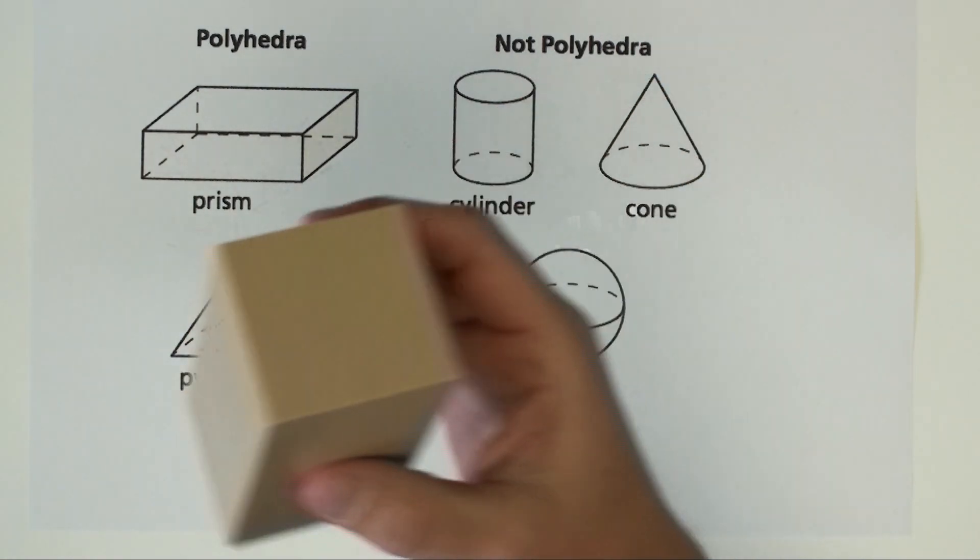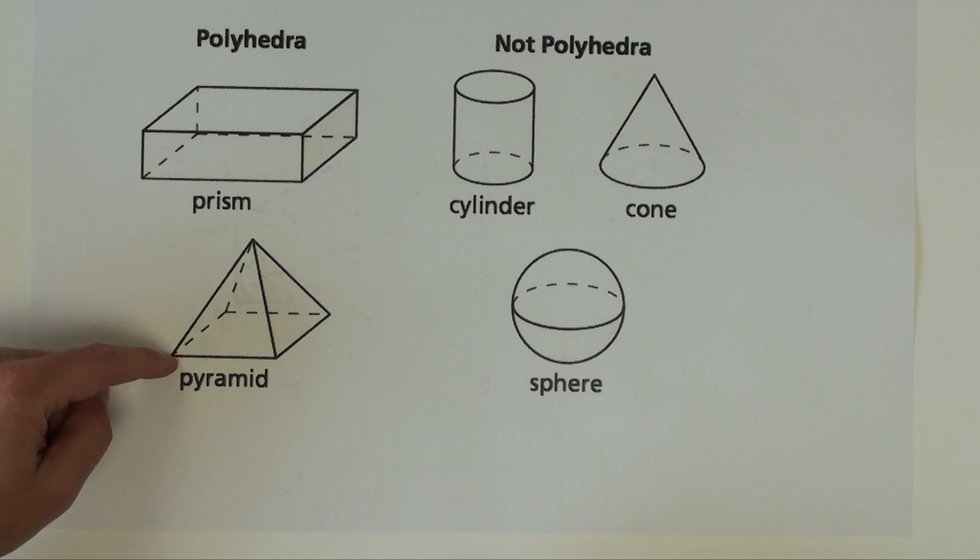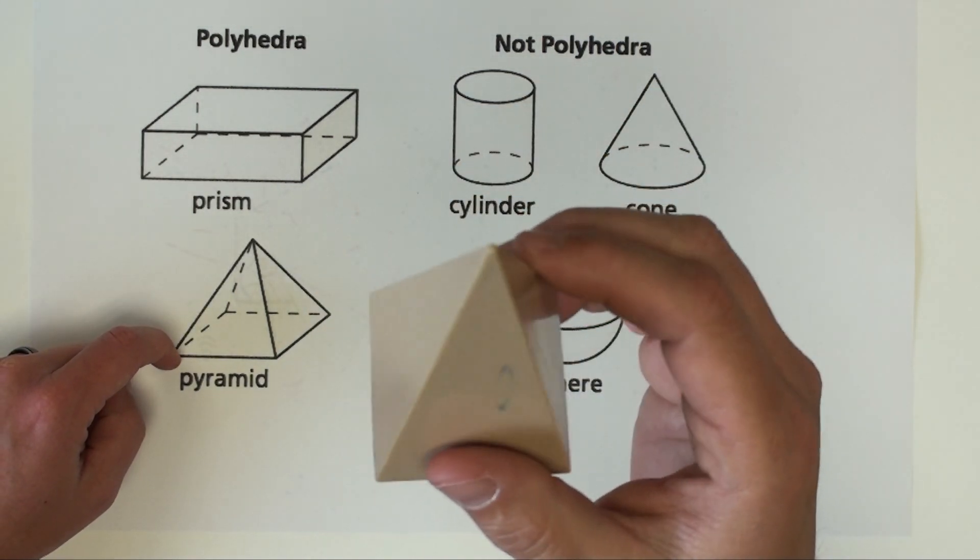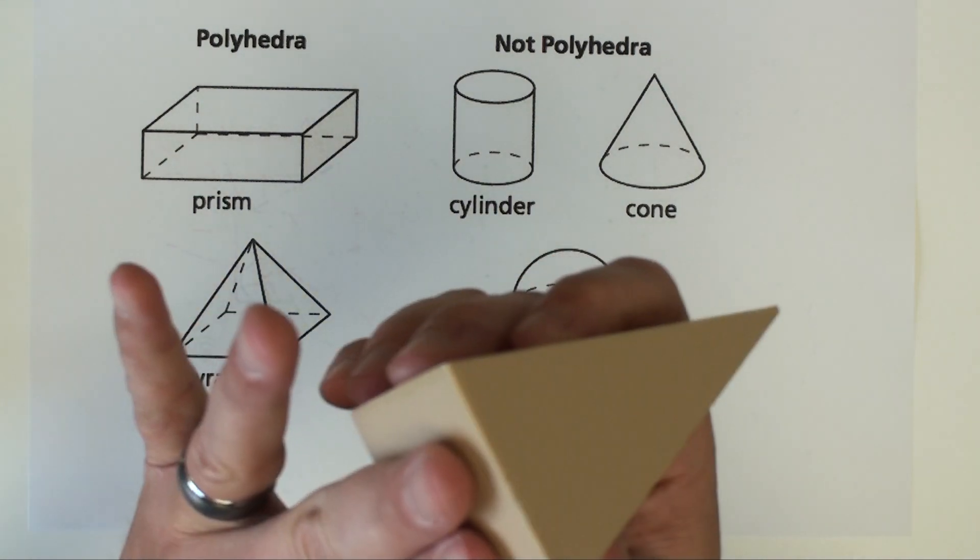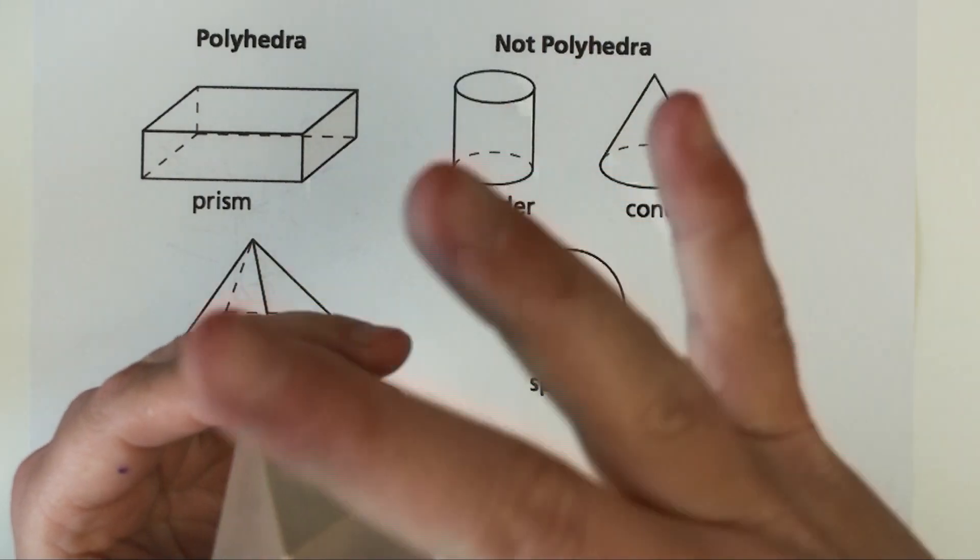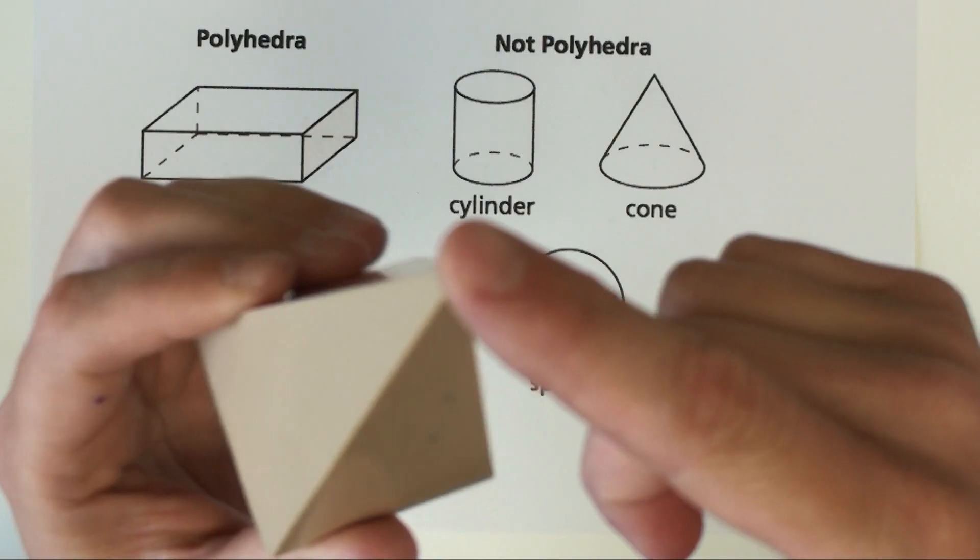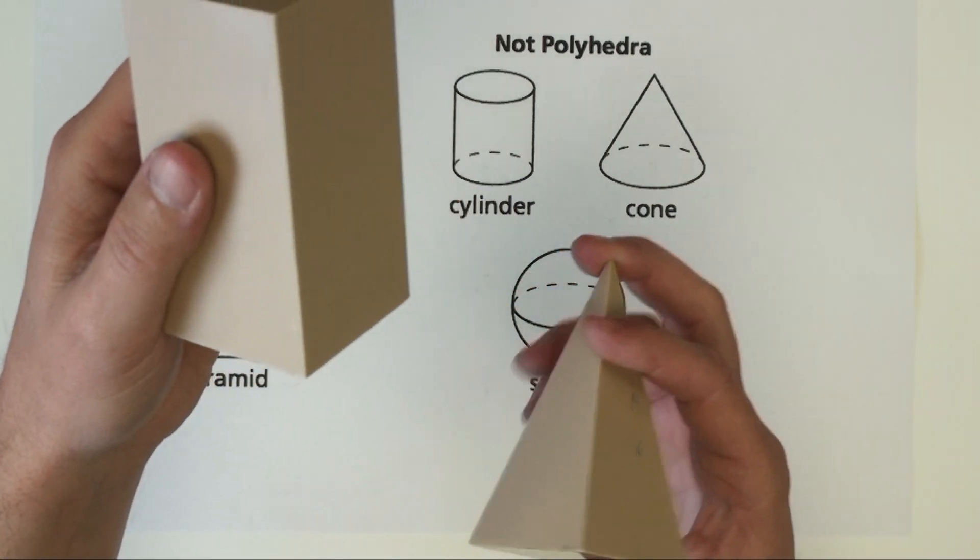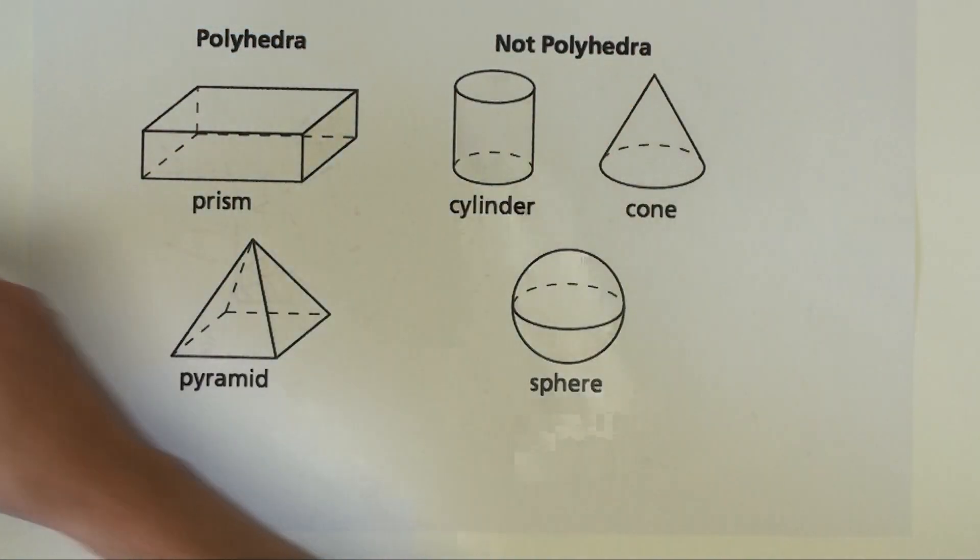Also we could see what we call a pyramid. A pyramid like this one here is very similar to the prism however it only has one base. It does not have the bottom and the top. The bottom here is a square. We don't see a square on top. We just see coming to a point on top. So that's a pyramid. So we've got prisms, pyramids that make up polyhedrons.